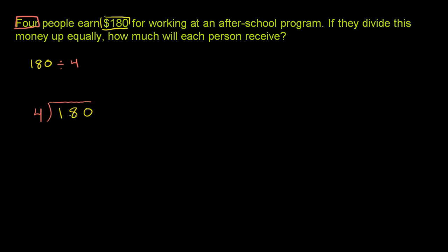Well, 4 times 4 is 16, so that goes into 18 at least 4 times. 4 times 5, let me write this down. 4 times 4 is equal to 16, so that goes into 18. 4 times 5 is equal to 20, so that does not go into 18. So this is going to go into 18 four times.